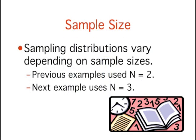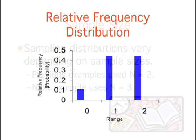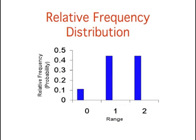It's also important to keep in mind that there is a sampling distribution for various sample sizes. For simplicity, we have been using a sample size of 2. This graph illustrates the sampling distribution of the range for a sample size of 3.